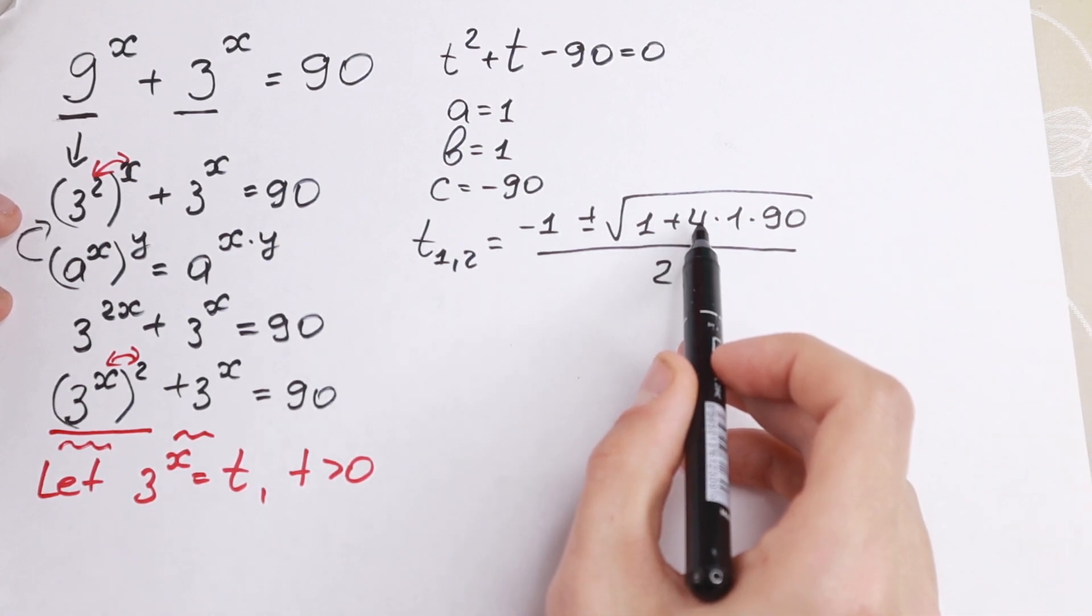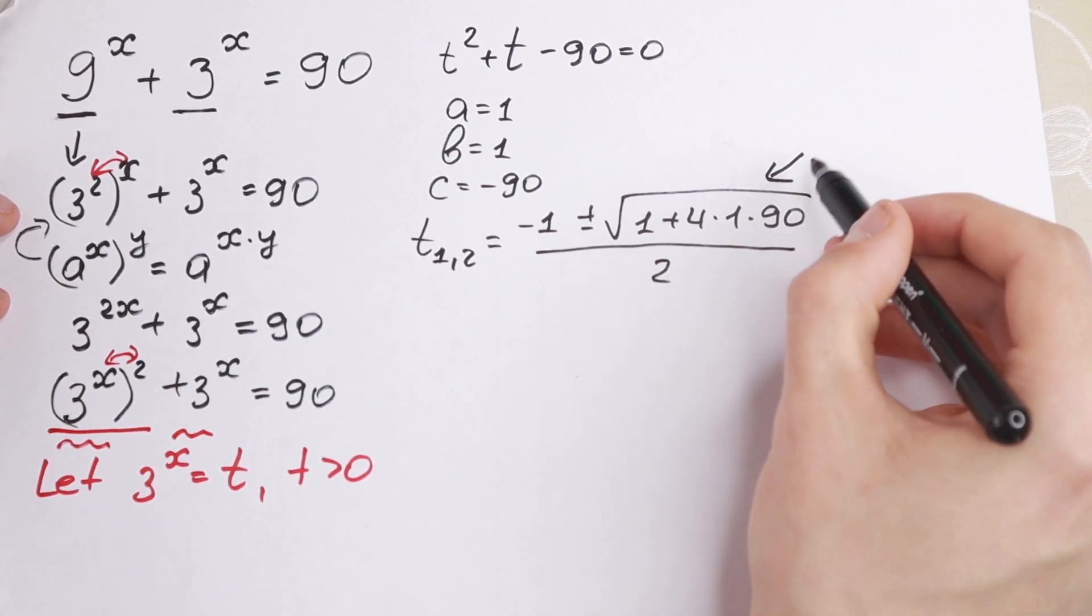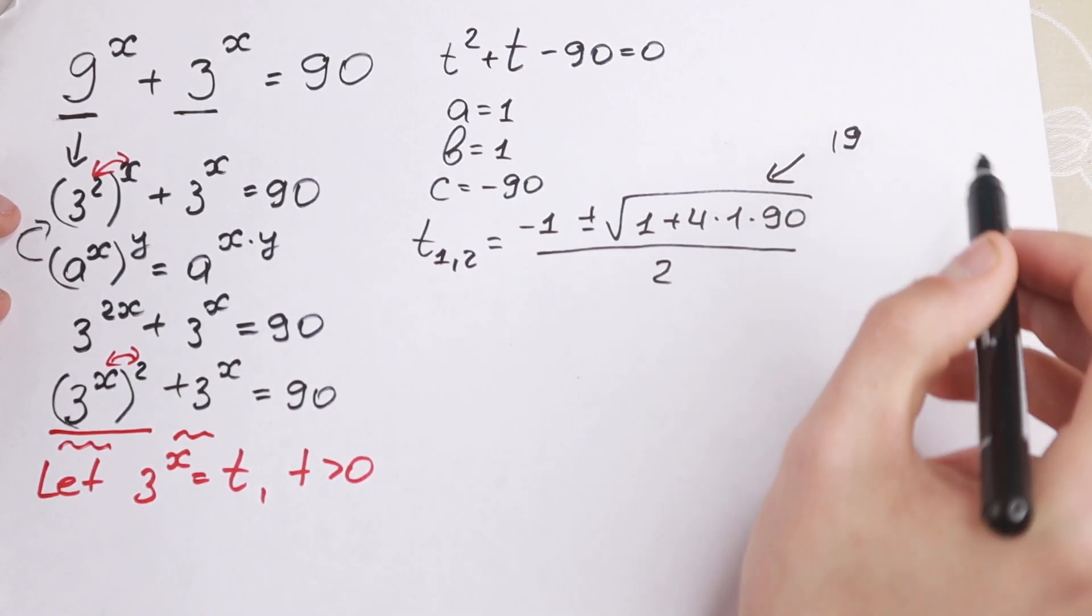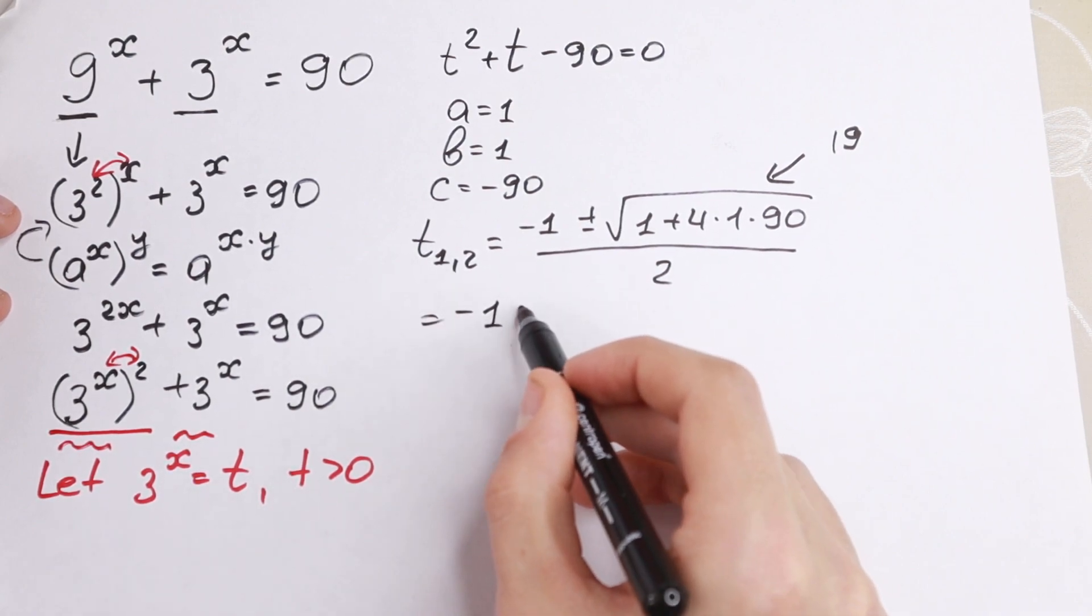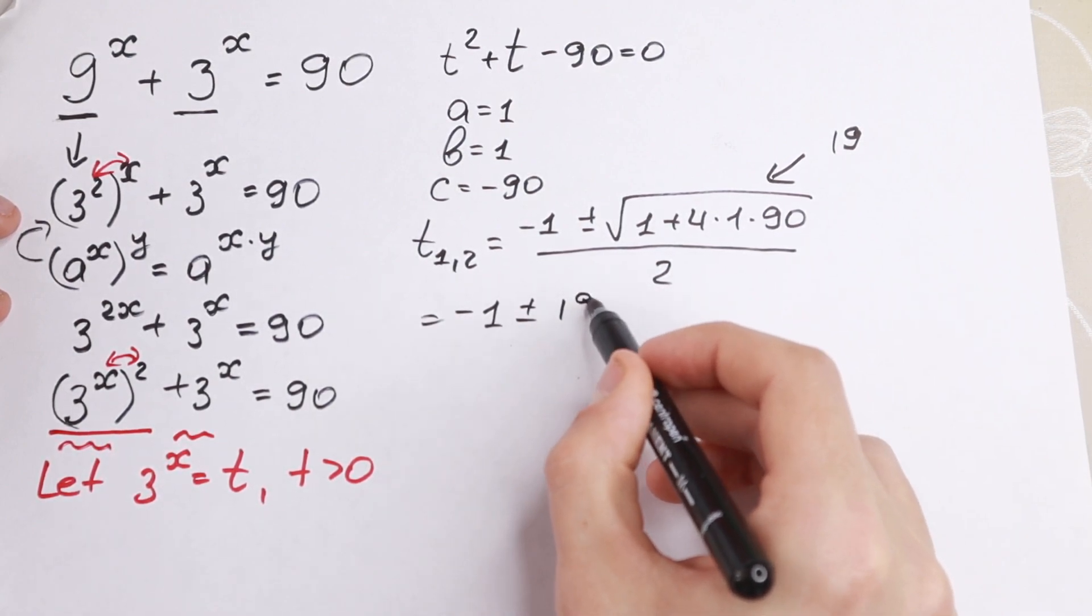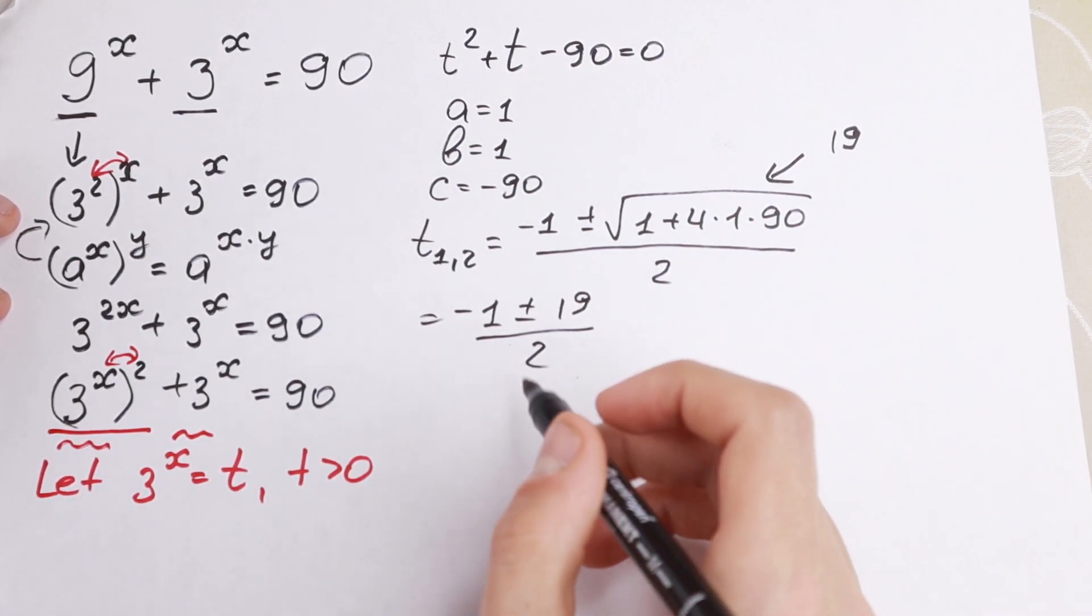Take a look. Right here we have 361. And if you find square root from here, this square root equal to 19. So take a look what we will have. We will have minus 1 plus minus 19 and dividing by 2. So as you can see we will find two roots.